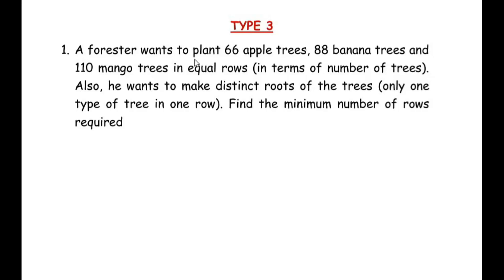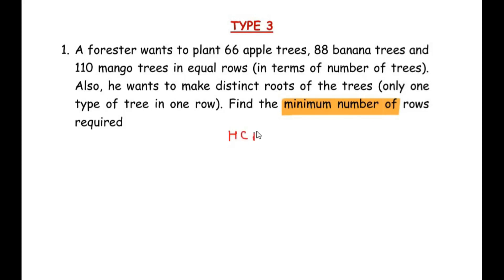Moving to Type 3 questions. A forester wants to plant 66 apple trees, 88 banana trees, and 110 mango trees in equal rows in terms of number of trees. He also wants distinct rows with only one type of tree per row. Find the minimum number of rows required. Since the minimum number is asked, the number has to be lesser than 66, 88, and 110 — so we have to find the HCF of the given numbers. The keyword 'minimum number of' indicates HCF.